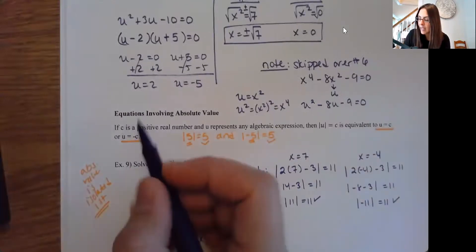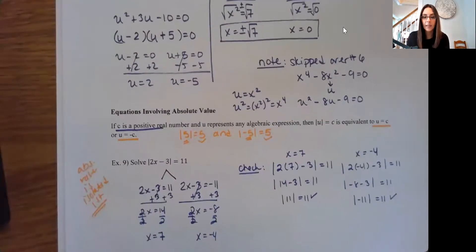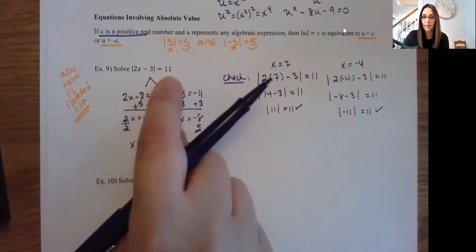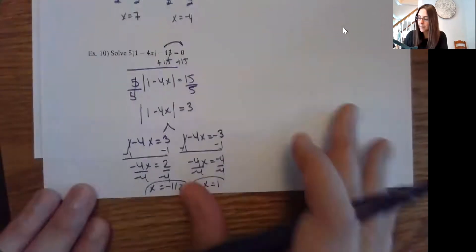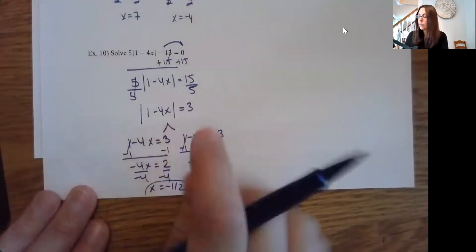Now, the other thing I want to point out, I have one more example for you, is that in all cases, after you isolate, that value is positive. So notice here, when my absolute value was set equal to a number, it was positive. Here, when my absolute value was set equal to a number, it was positive. And that's really important.